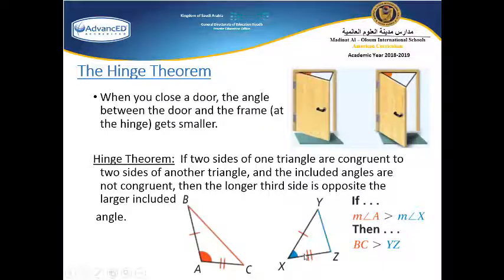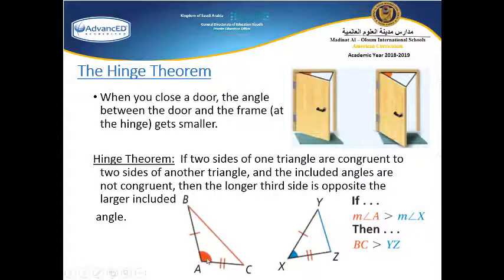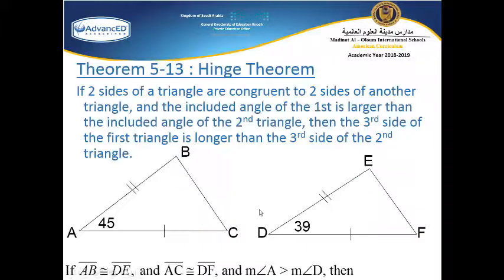According to the hinge theorem, if two sides of the first triangle are congruent to two sides of the second triangle and the included angles are not congruent, then if angle A is bigger than angle X, the opposite side to angle A is bigger than the opposite side to angle X — so BC is bigger than XZ.